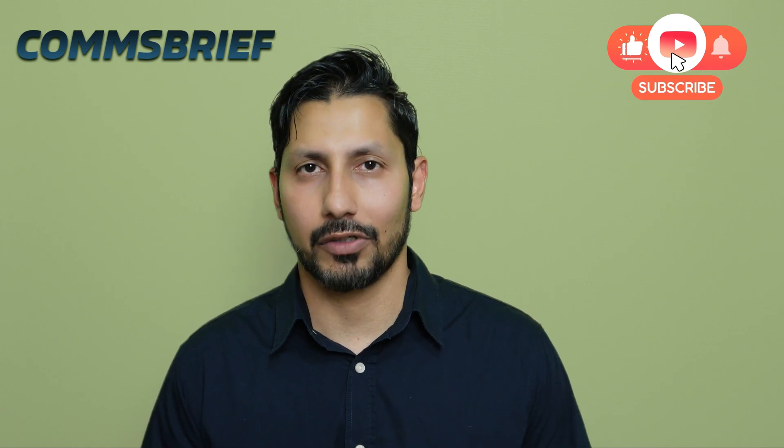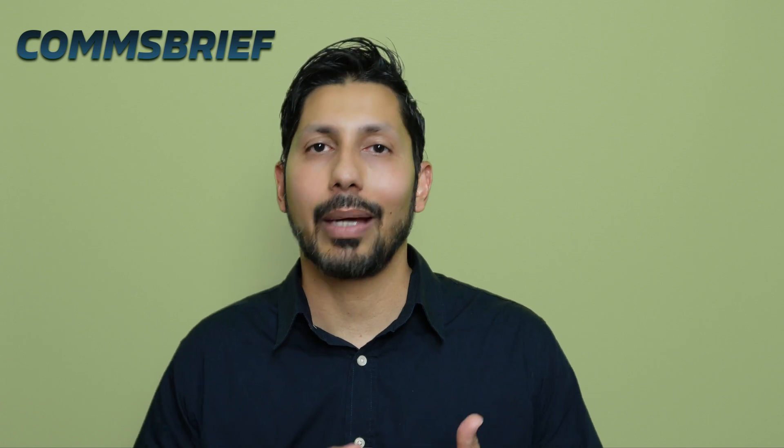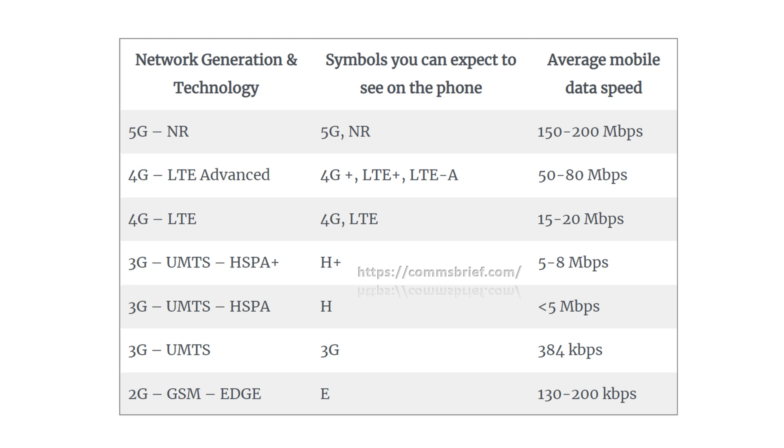The fourth reason why your mobile data speeds may be slow is that maybe your mobile network operator does not have the right network capacity. Network capacity basically means they don't have enough bandwidth to give you the resources you need to access mobile data. So if you are always connected to the 4G network with full signal bars and yet never get more than 5 to 10 Mbps, it means your operator does not have the right capacity in your area. The easiest way to find out is by comparing your speeds with average speeds shown for 2G, 3G, 4G, and 5G networks.